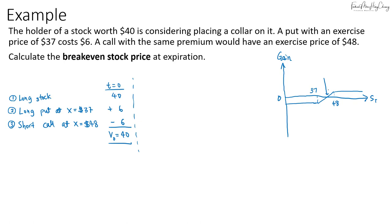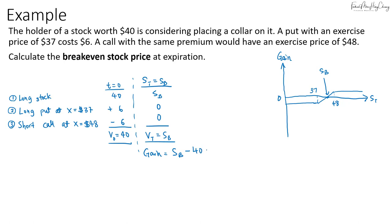The break-even price, denoted Sb, is between the two strike prices — above the put strike and below the call strike — so both options cannot be exercised. At the break-even spot price, the value of the collar equals the spot price itself. Since the gain must equal zero by definition, the break-even price is $40, which is the initial value of the stock.